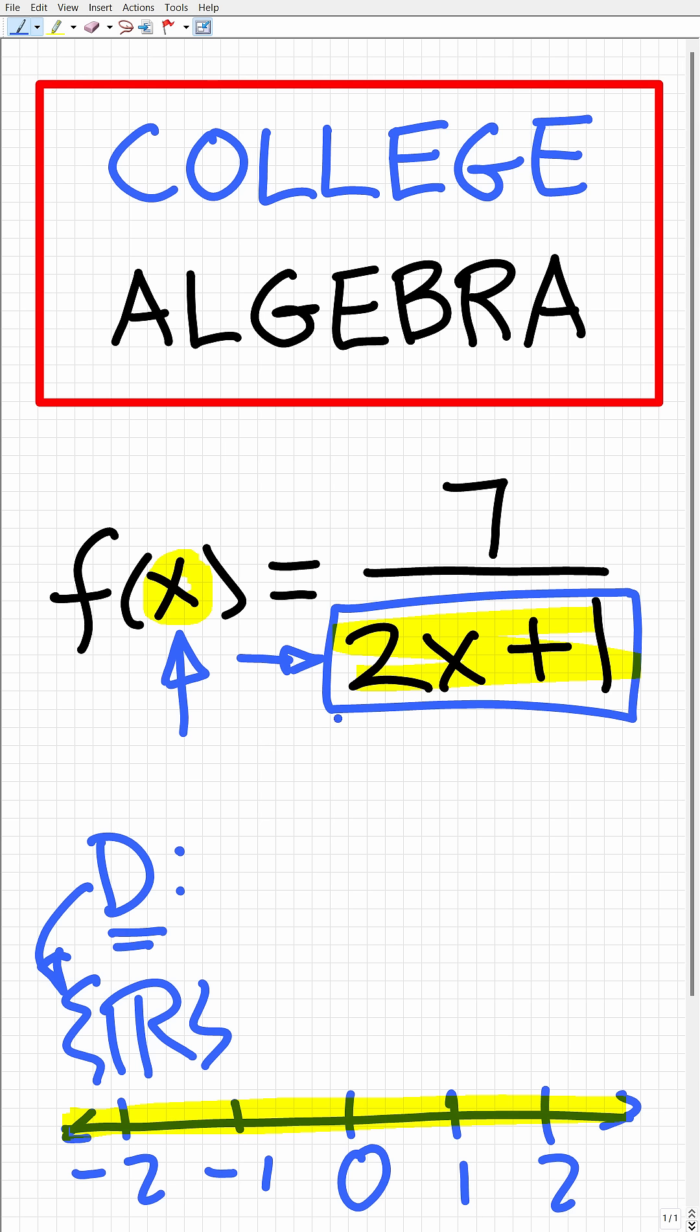So how do we figure this out? Well, what we're going to do is say, all right, 2x + 1, when are you equal to zero? So we're going to set up a simple equation like this: 2x + 1 = 0.